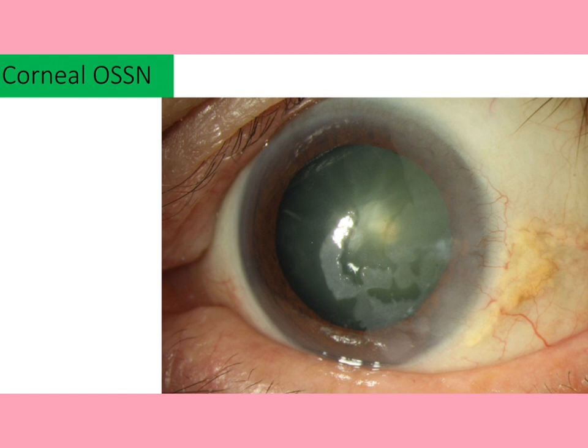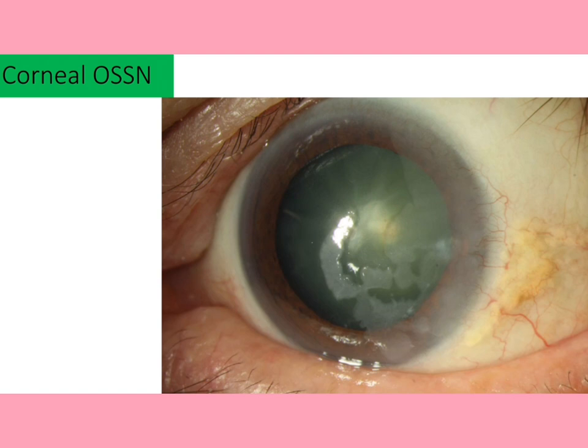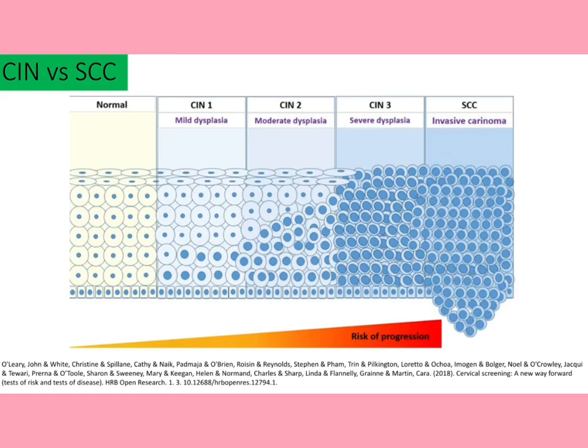Corneal OSSN is a type of gelatinous OSSN in the pre-invasive stage. The surface appears translucent, opalescent, and with a ground-glass appearance, with sharply defined margins. Corneal OSSN is avascular and results from the spread of abnormal cells from the nearby affected limbus. It is stationary and slow-growing in nature.